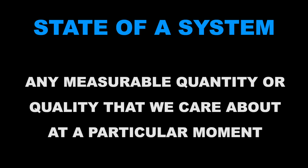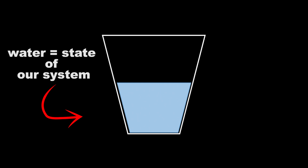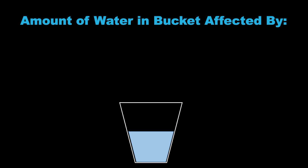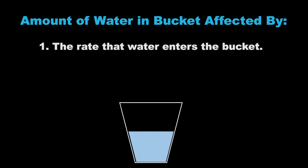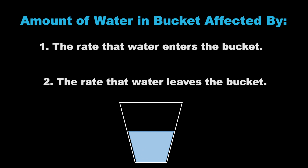Throughout the course of the video, we're going to be talking about the state of a system. This just refers to any measurable quantity or quality that we care about at a particular moment. For example, the state of our system is defined by the amount of water that's in this bucket — let's say 20 liters — where the amount of water in the bucket is only affected by two things: the rate that water enters the bucket, and the rate that water leaves it.